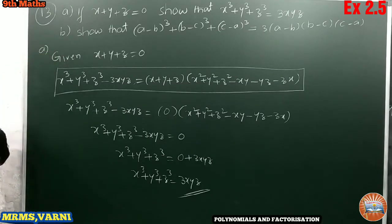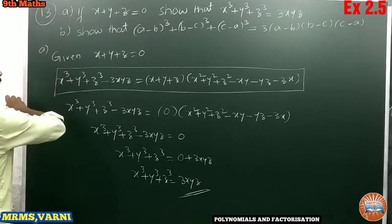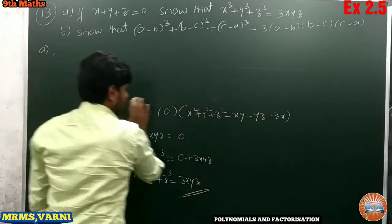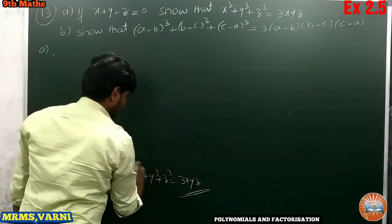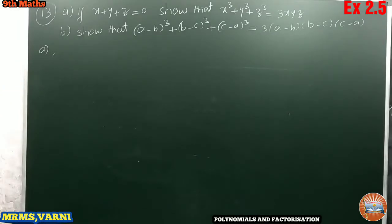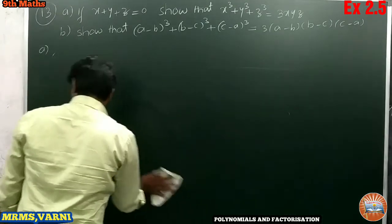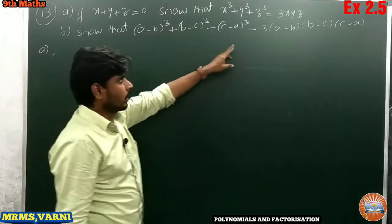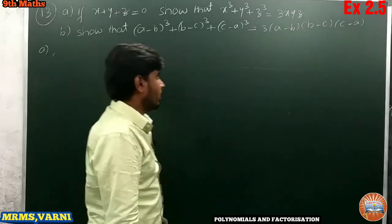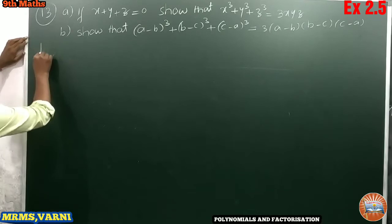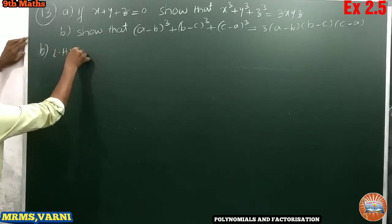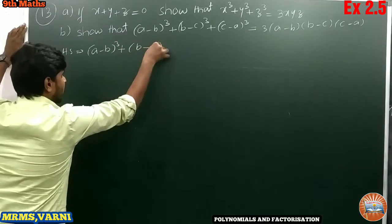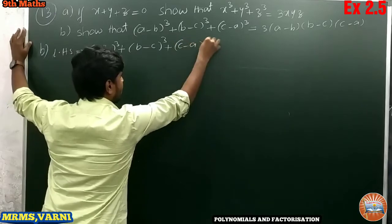Now we go for part B. The question is: show that a minus b all cube plus b minus c all cube plus c minus a all cube is equal to 3 into a minus b into b minus c into c minus a. We have to prove LHS equals RHS. I am taking LHS first: a minus b all cube plus b minus c all cube plus c minus a all cube.